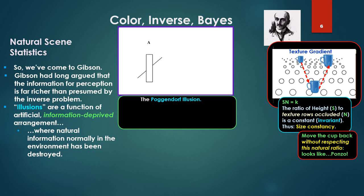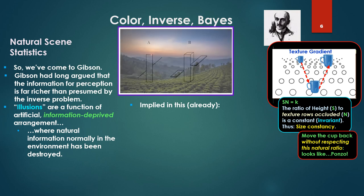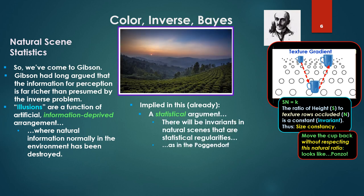Or here's another one, the Poggendorf illusion. The two lines look bent, but in reality they're not. But on B there we have a natural 3D configuration in which such lines would be found. So implied in this already, this is a statistical argument. There will be invariance in natural scenes. There are statistical regularities, as in the Poggendorf. Now we're going to see a little conflict here because Gibson is invoking these invariance laws, but also this does not exclude statistical invariance.